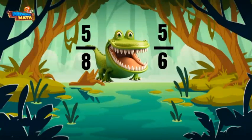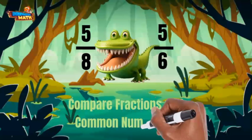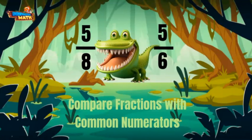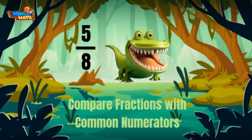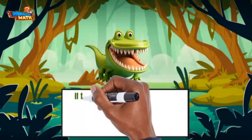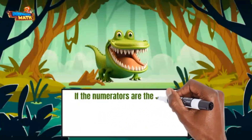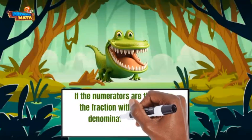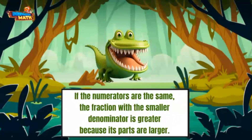Which one should I chomp up? I just can't figure out which one is greater. Wait, I can compare fractions with common numerators! The numerator is the same, so the smaller denominator is the greater fraction. I will eat five-sixths! Hello, I'm Ali and I love eating the largest fractions. If the numerators are the same, the fraction with the smaller denominator is greater because its parts are larger.